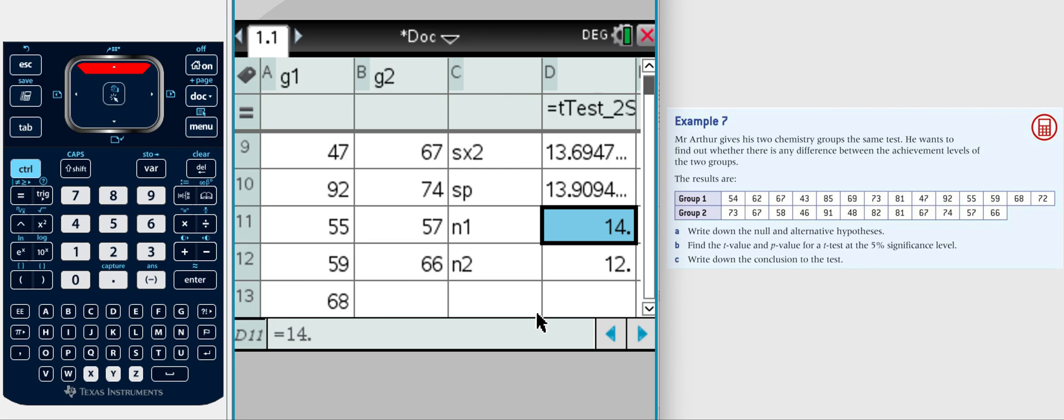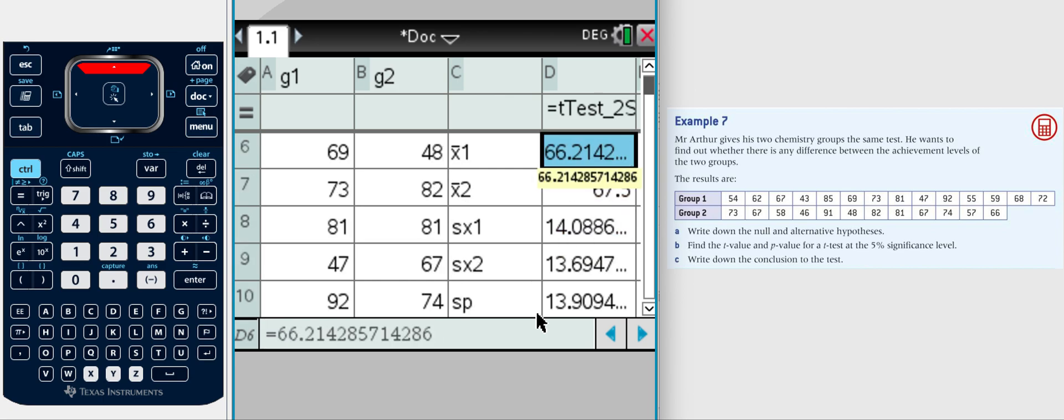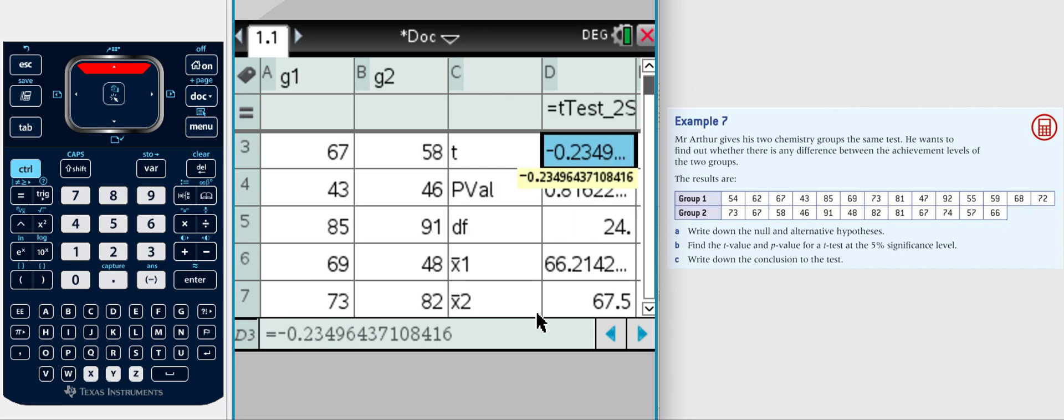It gives us some data and the ones that we're interested in are here. We've got a t value of negative 0.235 and a p value of 0.816. We're going to use those to make a judgment to decide the conclusion to the test.